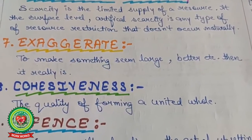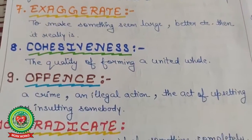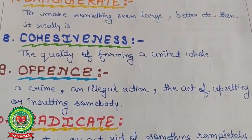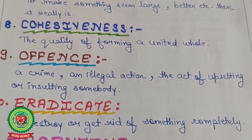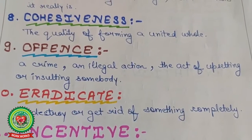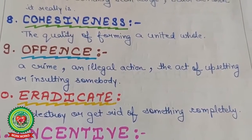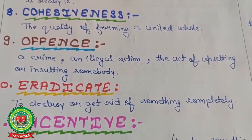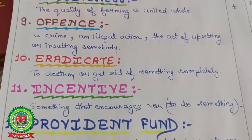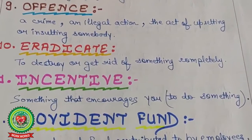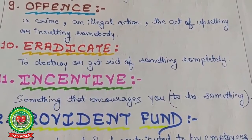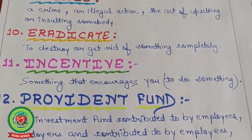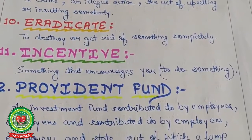Eighth word: cohesiveness — the quality of forming a united whole. Ninth word: offense — a crime and illegal action; the act of upsetting or insulting somebody. Tenth word: eradicate — to destroy or get rid of something completely. Eleventh word: incentive — something that encourages you to do something.